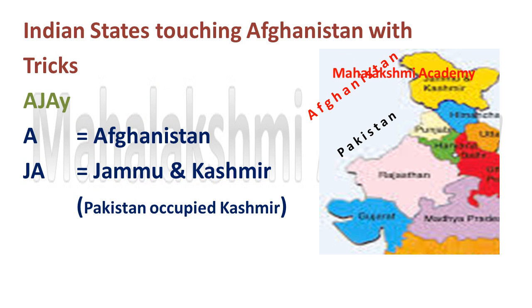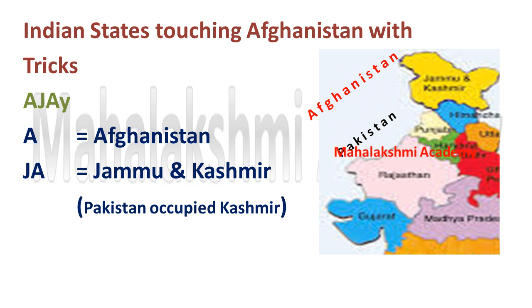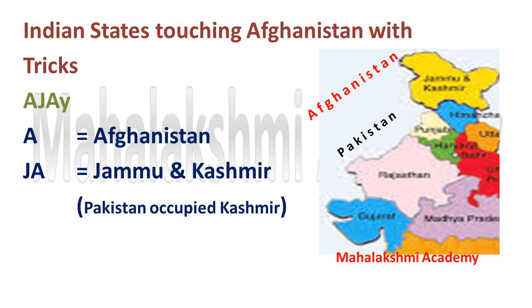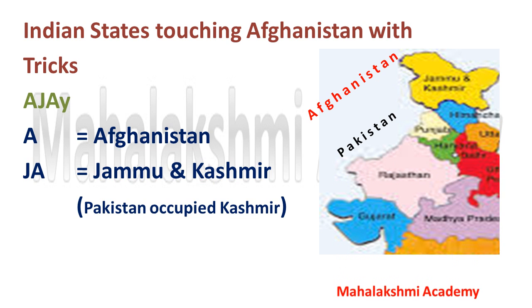Another one is Afghanistan — Indian states touching the boundaries with Afghanistan. The trick is simply A-J: A stands for Afghanistan and J-A stands for Jammu and Kashmir. The portion of Jammu and Kashmir touching Afghanistan is Pakistan-occupied Kashmir, which we still consider part of India.